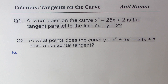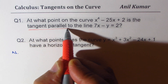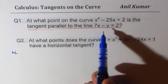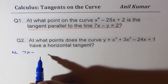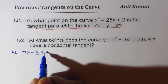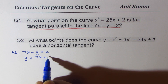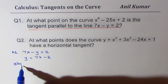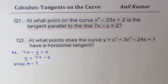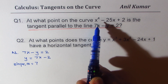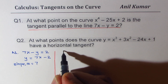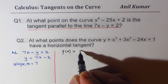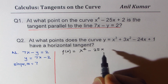We want a tangent parallel to the line. So what you can do here is rearrange the equation and find the slope. The line given to us is 7x minus y equals to 2. We can write this as y equals to 7x minus 2, so the slope m is 7. We need to find a point on this curve where slope is 7. Let's call this as a function f of x equals to x to the power of 4 minus 25x plus 2.